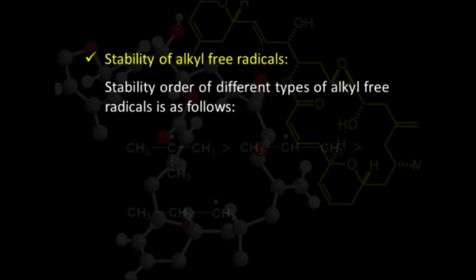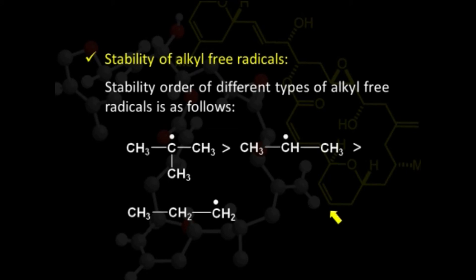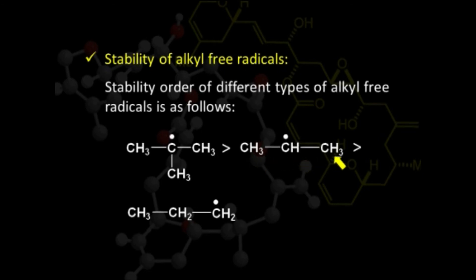Stability of alkyl free radicals can also be understood with the help of hyperconjugation. Alkyl free radicals are capable of showing hyperconjugation because of the presence of carbon-hydrogen sigma bonds at the alpha position with respect to the incompletely filled p orbital. In the case of trisubstituted alkyl free radicals, more resonating structures are possible because there are 9 carbon-hydrogen sigma bonds, compared to 6 for secondary and only 2 for primary, making the primary free radical the least stable.